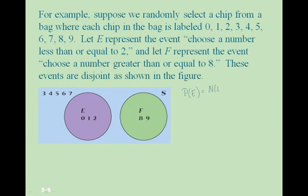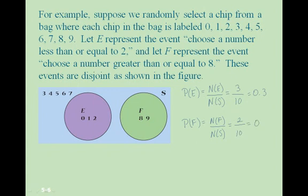The probability of event E is the number of outcomes in E divided by the total in the sample space. There are three outcomes in circle E, and the total number in the sample space is 10 (digits 0 through 9), giving us P(E) = 3/10 = 0.3. The probability of event F is the number of outcomes in F divided by 10. There are 2 outcomes in circle F, so P(F) = 2/10 = 0.2.